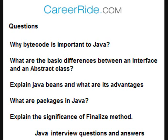Next question: explain the significance of the finalize method. The finalize method of an object is called when the garbage collector is about to clean up the object. By using the finalize method, we can define specific actions that will occur when an object is just about to be reclaimed by the garbage collector.